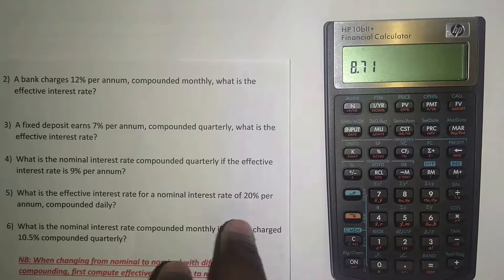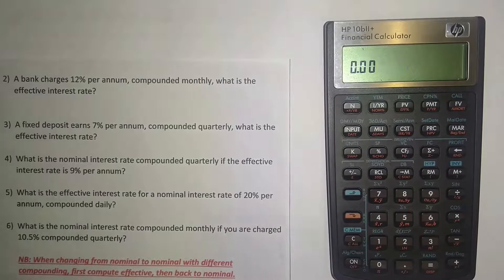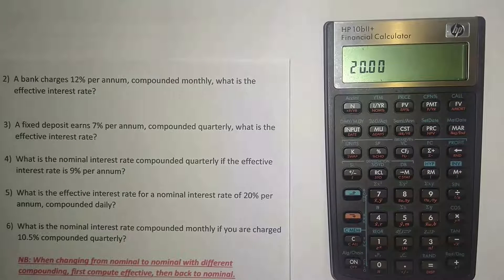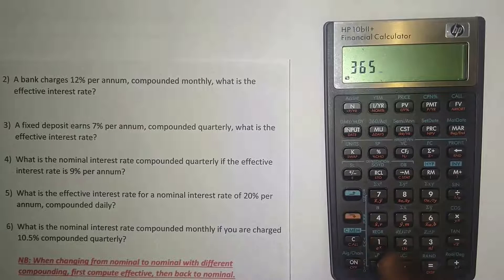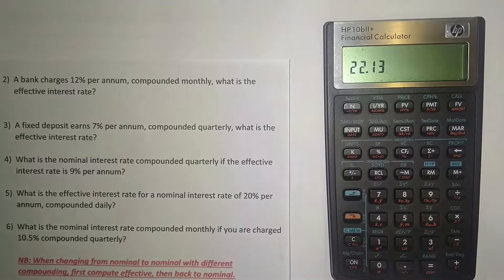Example five: what is the effective interest rate for a nominal interest rate of 20% per annum compounded daily? Clear the memory. For daily compounding we assume 365 days. Press 20, orange button, then I/YR for the nominal rate. Then put 365 for compoundings per year, press orange, then PMT. Then press orange and PV for the effective interest rate. The effective interest rate is 22.13%.